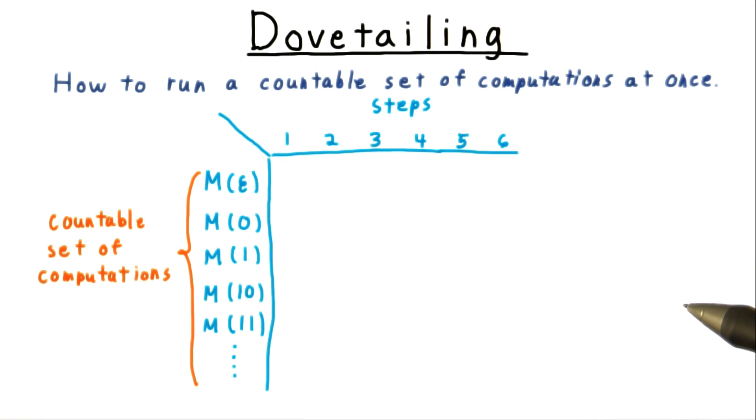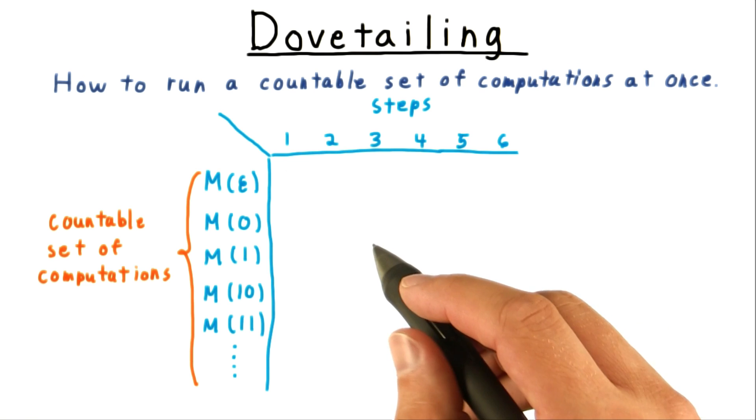This is the same problem that we encountered when trying to show that a countable union of countable sets is countable, or that the set of rational numbers is countable. And the solution is the same too.